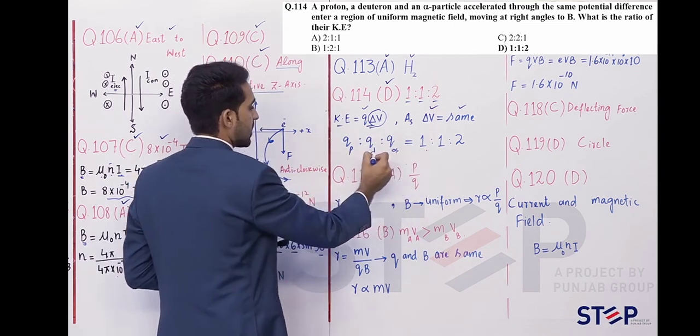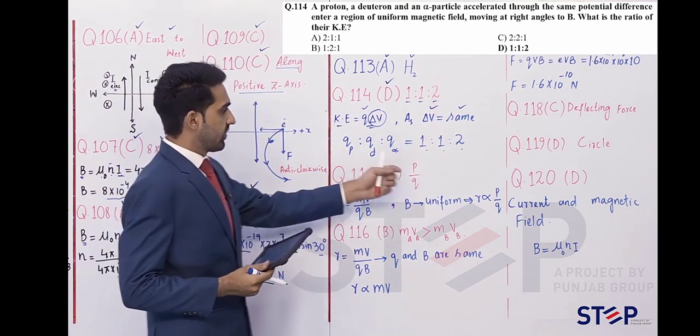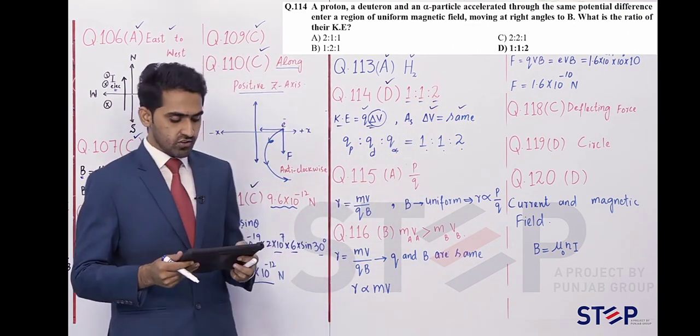The charge of proton is 1, the charge of deuteron is 1, the charge of alpha particle is 2. You will get the correct answer: 1:1:2. Thank you, dear student.